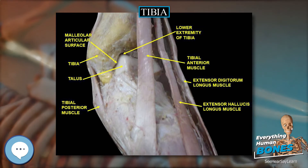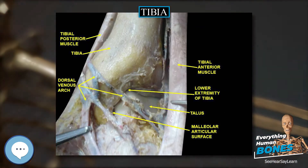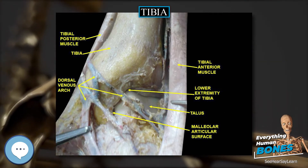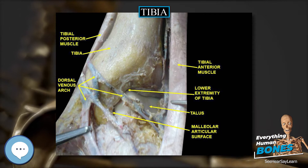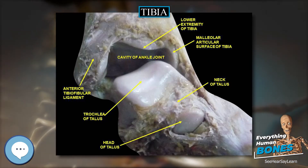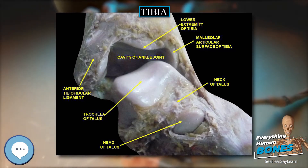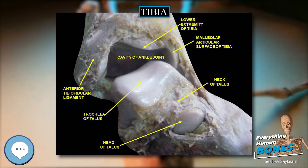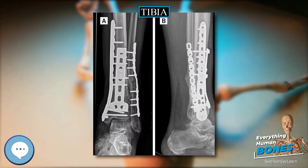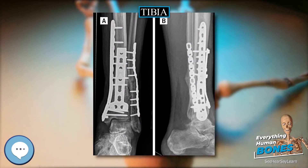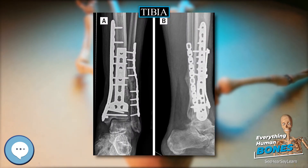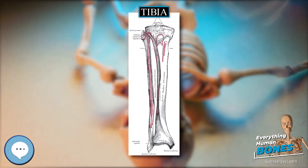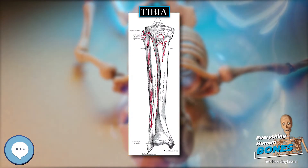From its middle third, some fibers of the soleus and flexor digitorum longus muscles take origin. The interosseous crest or lateral border is thin and prominent, especially its central part, and gives attachment to the interosseous membrane. It commences above in front of the fibular articular facet, and bifurcates below, to form the boundaries of a triangular rough surface for the attachment of the interosseous ligament connecting the tibia and fibula.